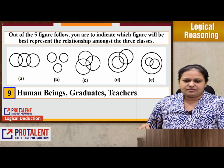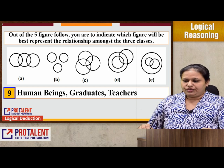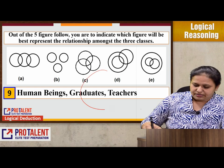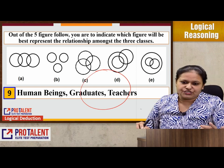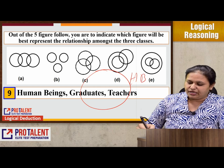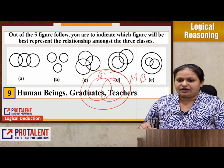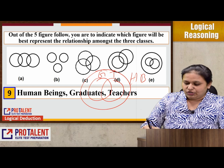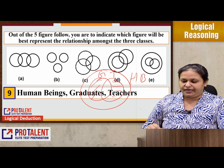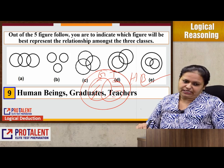Next question: human beings, graduates, and teachers. All graduates and teachers have to be human beings. So human beings is the largest circle containing both. And hence the best option is option E.